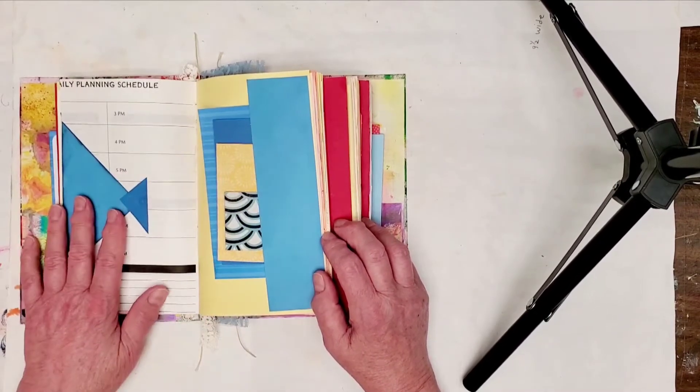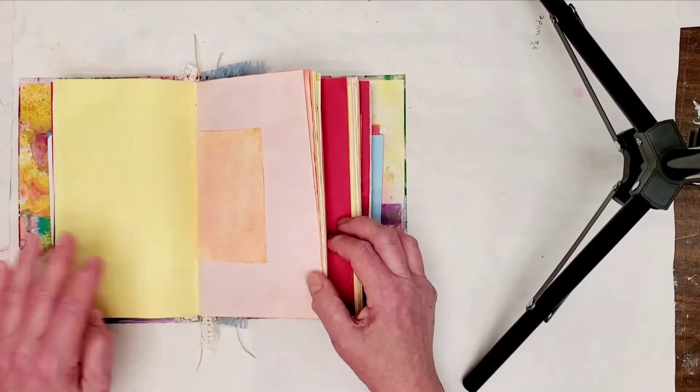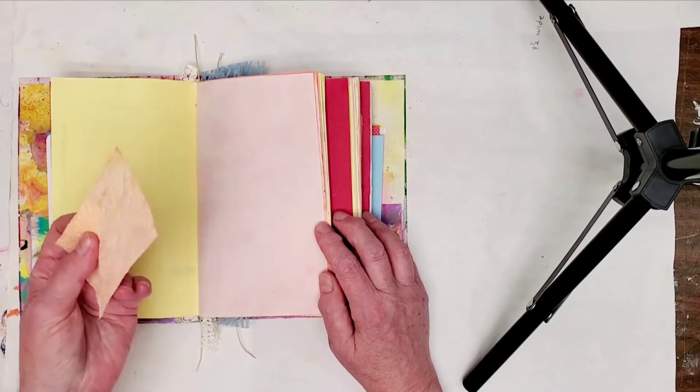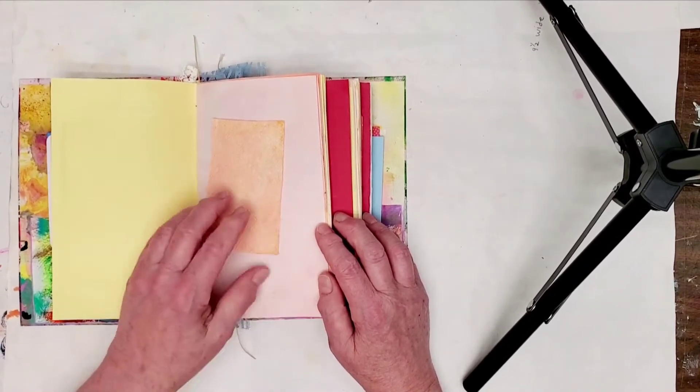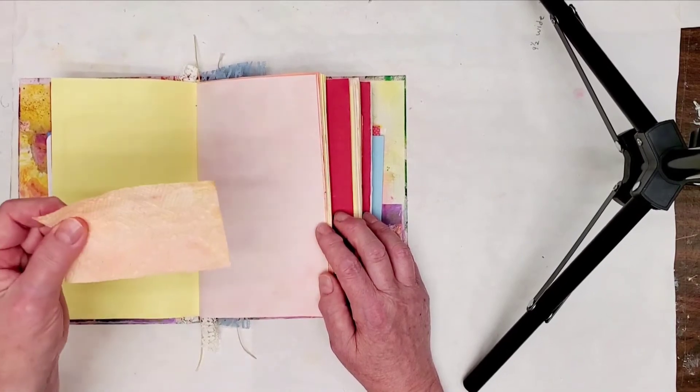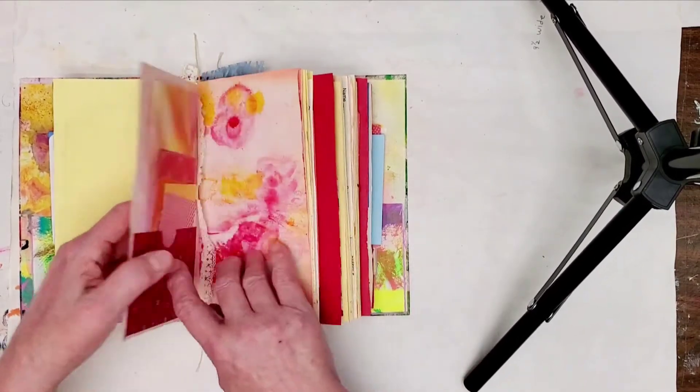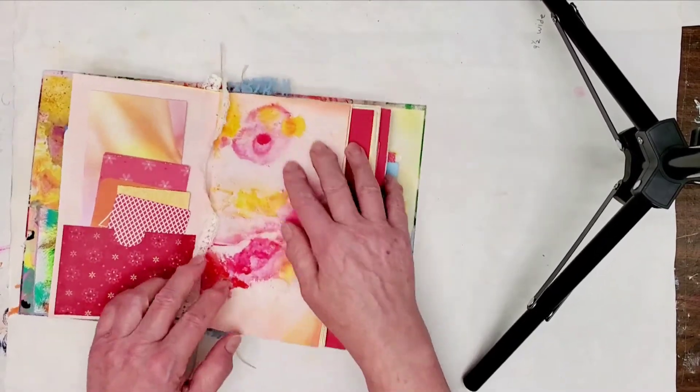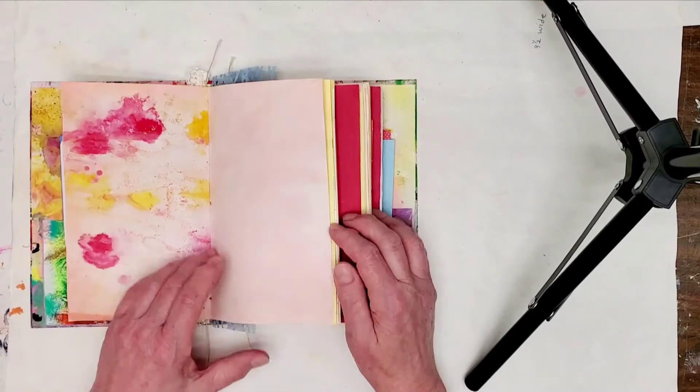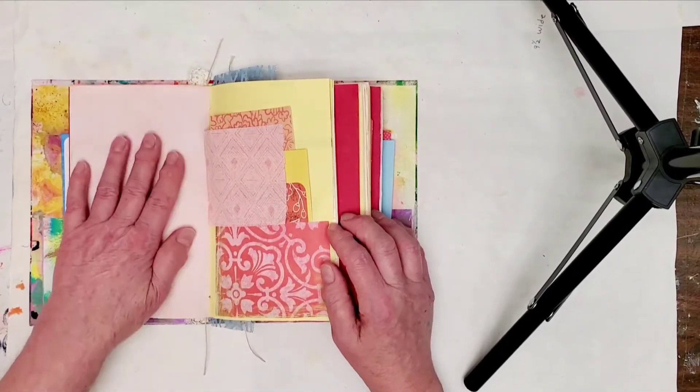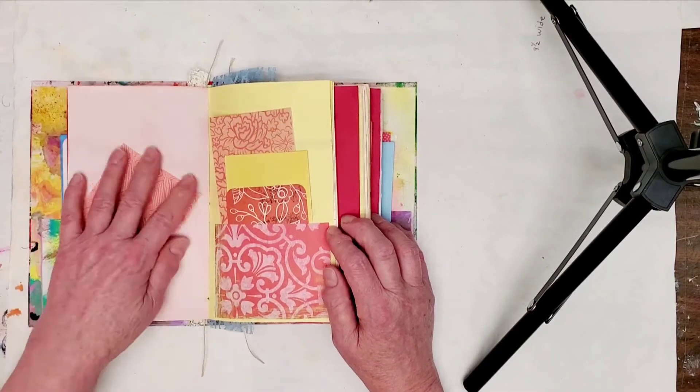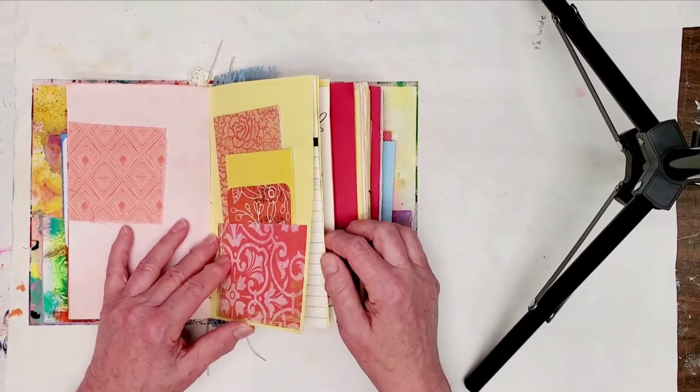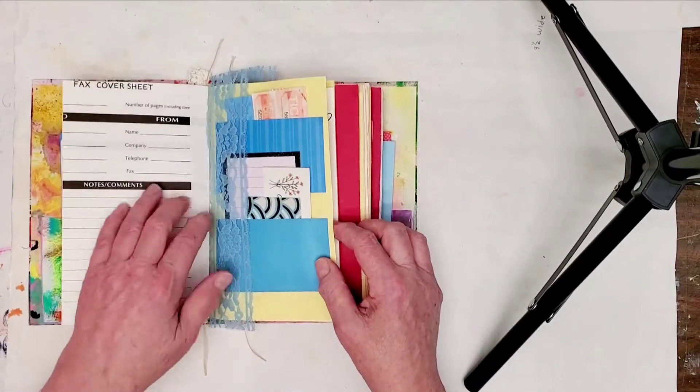This opens up and this is a Kool-Aid dyed paper towel that was the sock towel that I used when I dyed some paper, and I decided just to save that. I think I like it, I like that texture on there so I'm going to use that here. I'm gonna put lace on the edges of that one. This is Kool-Aid dyed paper.